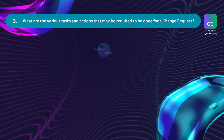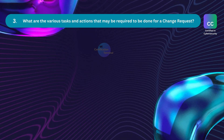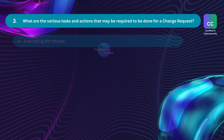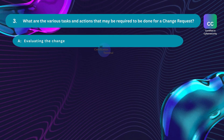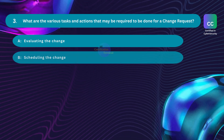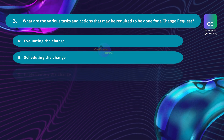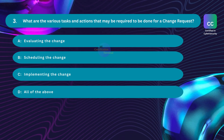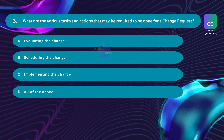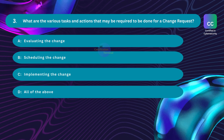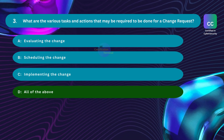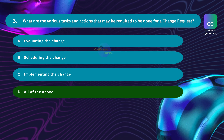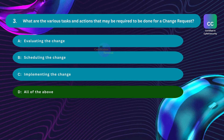Question number three: What are the various tasks and actions that may be required for a change request? Option A: evaluating the change. Option B: scheduling the change. Option C: implementing the change. Option D: all of the above. The correct answer is Option D: all of the above. The change request process is often part of a broader change management framework, which aims to ensure that changes are planned, controlled, and executed in a way that minimizes risks and disruptions.